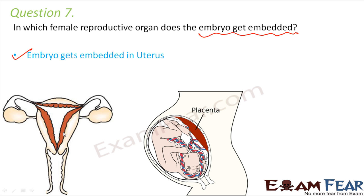The uterus has an inner endometrium layer which is vascular in nature — richly supplied with blood vessels — so it can provide nourishment to the embryo. Because of all these advantages, the uterus is the part where the embryo gets embedded.